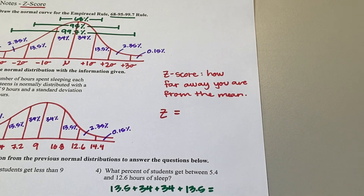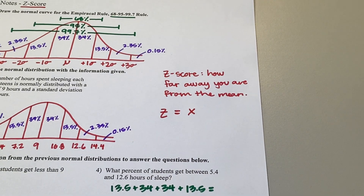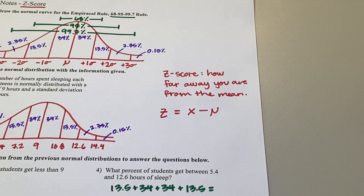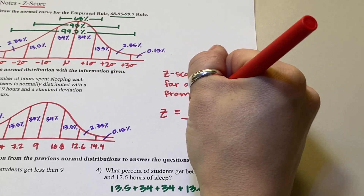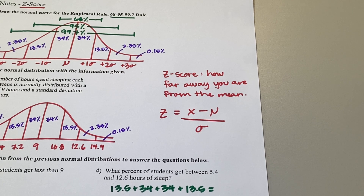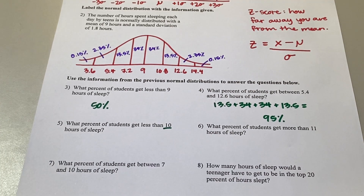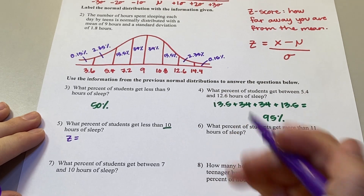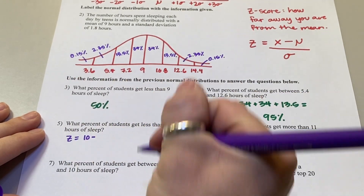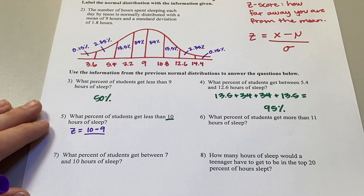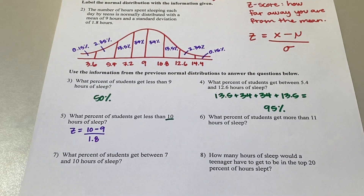In this case, x is 10. So: z = (10 − 9) ÷ 1.8. That's our score minus the mean, divided by the standard deviation. Let's go ahead and punch this into the calculator carefully.